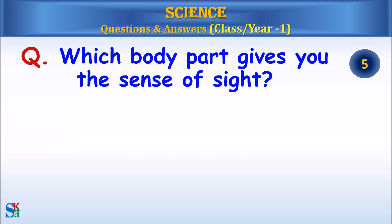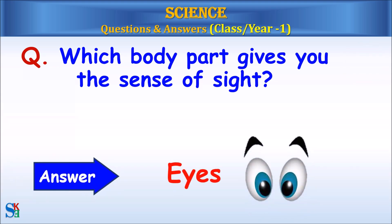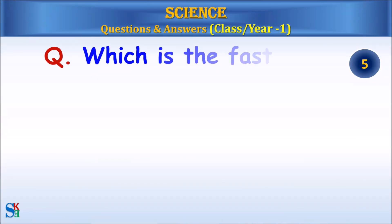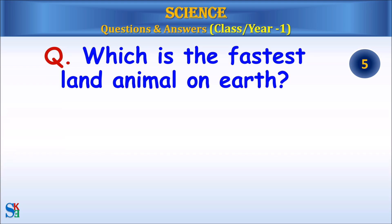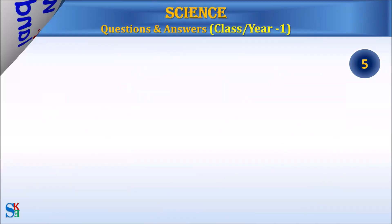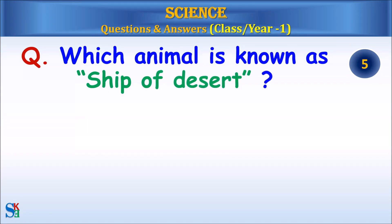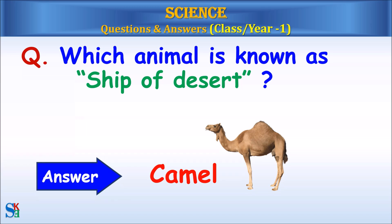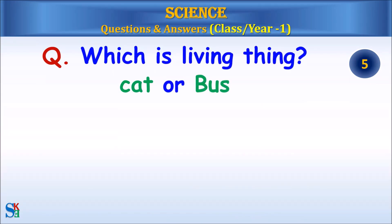Which body part gives you the sense of sight? Answer: eyes. Which is the fastest land animal on earth? Answer: cheetah. Which animal is known as the ship of the desert? Answer: camel. Which is a living thing, cat or bus? Answer: cat.